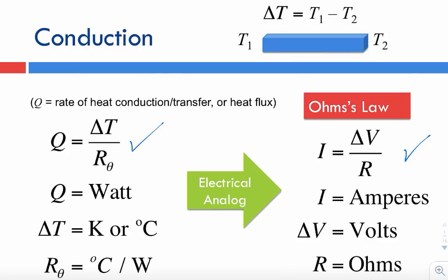The units of heat are in watts, and a watt is energy per unit time — energy per second. The reason we have that per second is because heat is not just energy, but traveling energy, so it has units of energy per time. Delta T is given in either Kelvin or degrees Celsius, and from this equation the unit of thermal resistance is Kelvin or Celsius divided by watts.